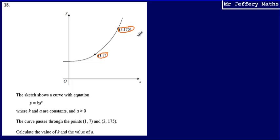So let's substitute this one in first. I know that when y is equal to 175, so y is 175, that is equal to k multiplied by a to the power of x, and x here is 3. So 175 equals ka cubed.